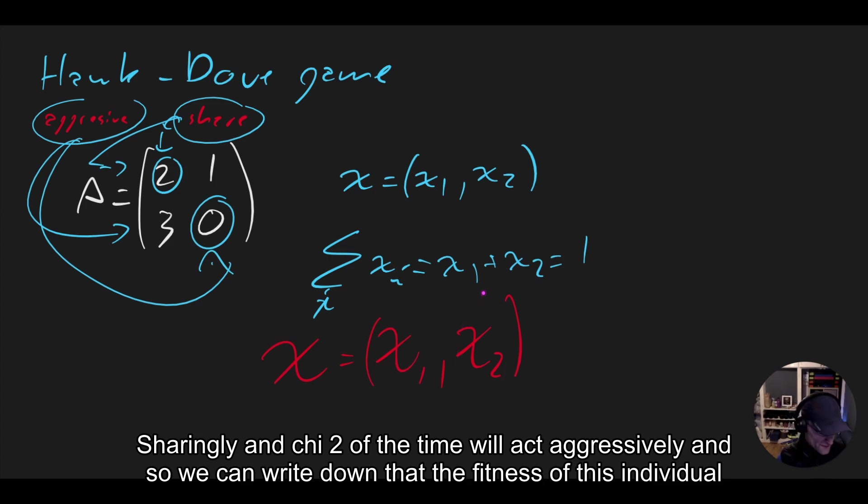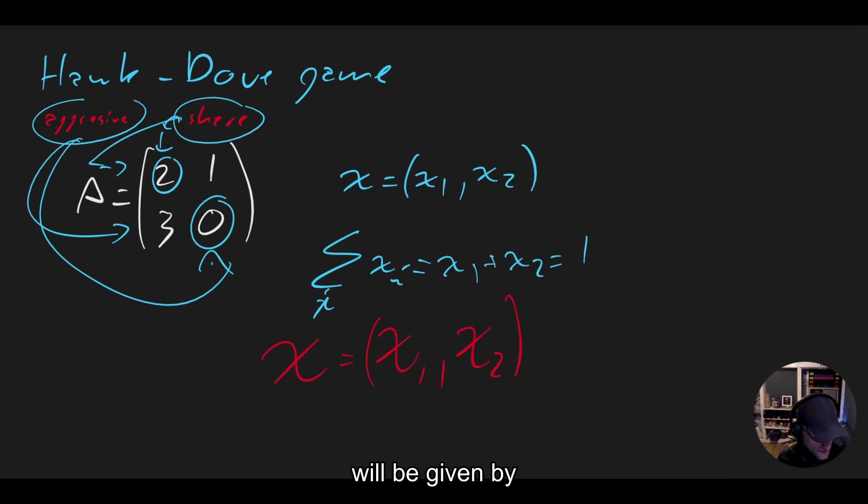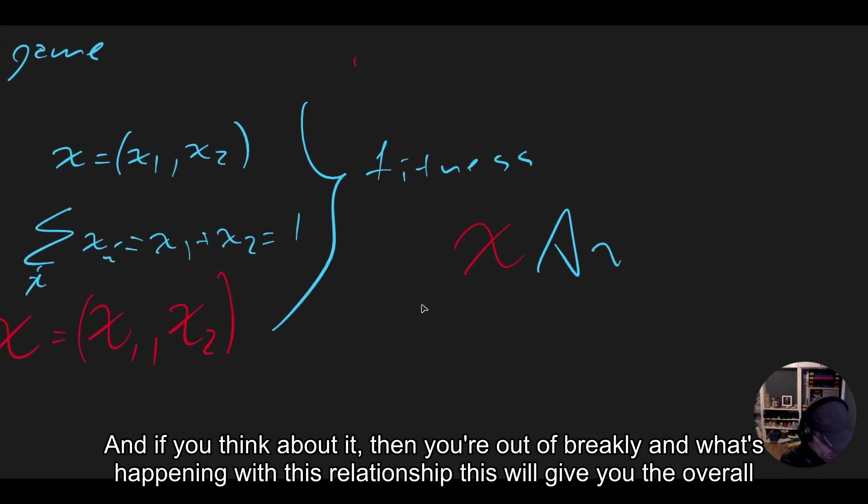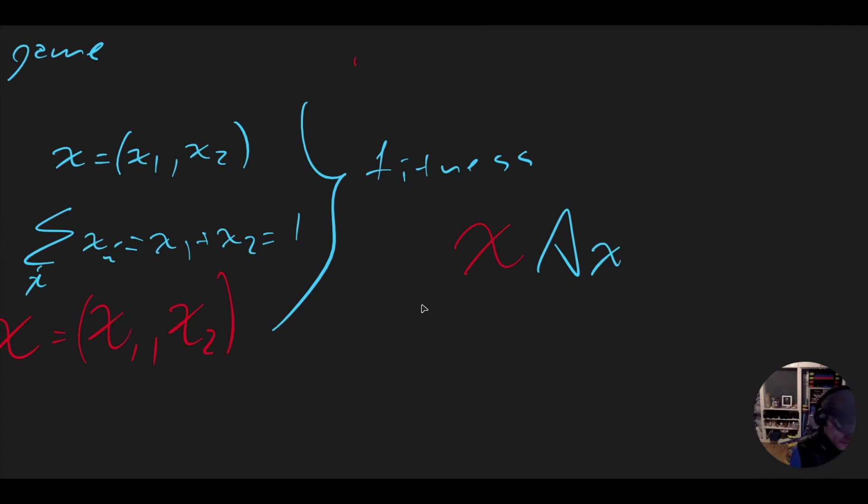And so we can write down that the fitness of this individual will be given by chi times the matrix A times x. And if you think about it linear algebraically and what's happening with this relationship, this will give you the overall fitness.